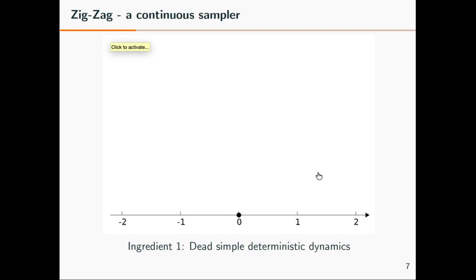So how does it work? This exact sampler, the starting point is ingredient number one: simple deterministic dynamics. There's a particle moving through space without any force acting on it. It just moves away and never comes back, so this is not yet a sampler. But it has very simple dynamics.